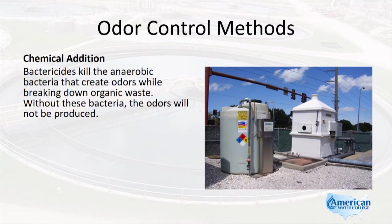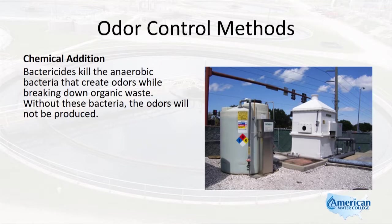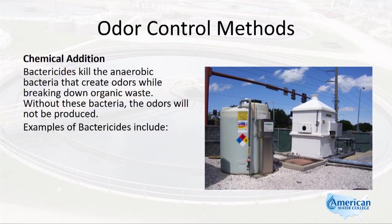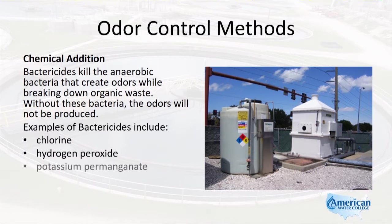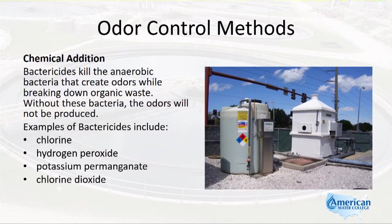Bactericides kill the anaerobic bacteria that create odors while breaking down organic waste. Without these bacteria, the odors will not be produced. Examples of bactericides include chlorine, hydrogen peroxide, potassium permanganate, chlorine dioxide, sodium hypochlorite, and oxygen.